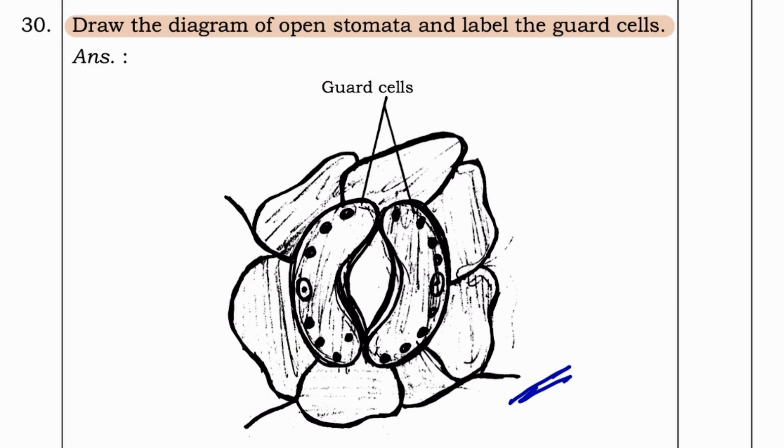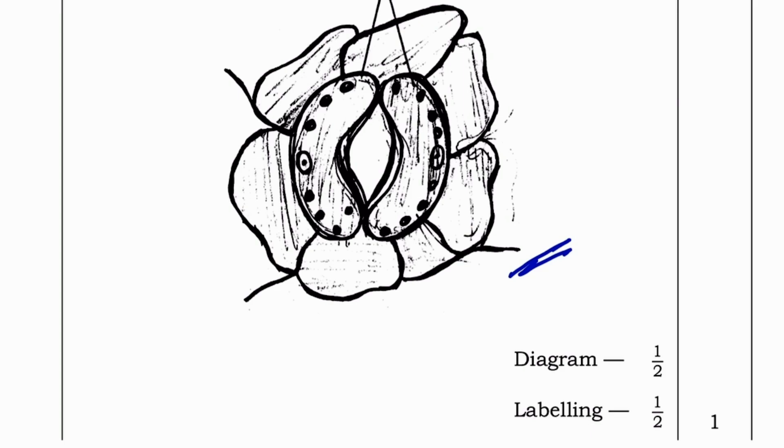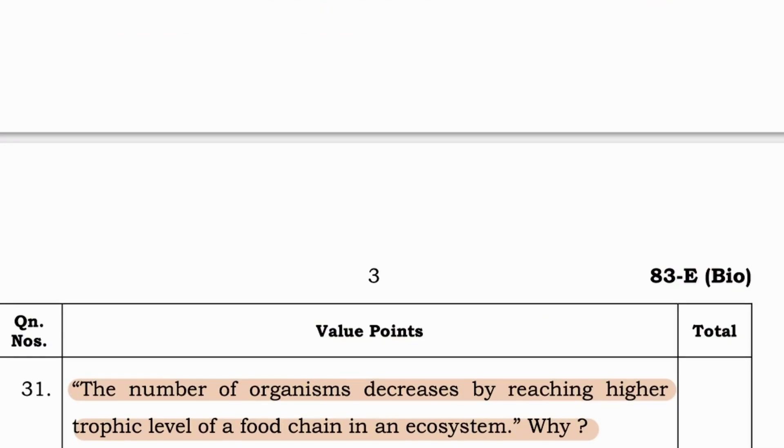Draw the diagram of open stomata and label the guard cells. Here open stomata diagram. Before was also a diagram but they have not asked about any labeling. Here they have asked for label of guard cells. And this is the second time in previous years this question has been repeated. I hope these videos have been helpful in your SSLC science exam preparation. Best of luck for your examination. Thank you.